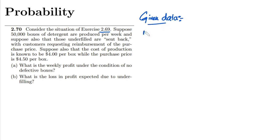The number of boxes produced per week is 50,000. Suppose also that underfilled boxes are sent back with customers requesting reimbursement of the purchase price. The cost of production is $4.00 per box while the purchase price is